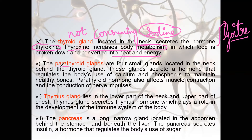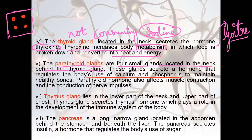The parathyroid glands are four small glands located in the neck behind the thyroid gland — like four tiny button-like glands at the back side of the thyroid. These glands secrete a hormone that regulates the body's use of calcium and phosphorus to maintain healthy bones. Parathyroid hormones also affect muscle contraction and the conduction of nerve impulses, because calcium and phosphorus ions are needed for bones.